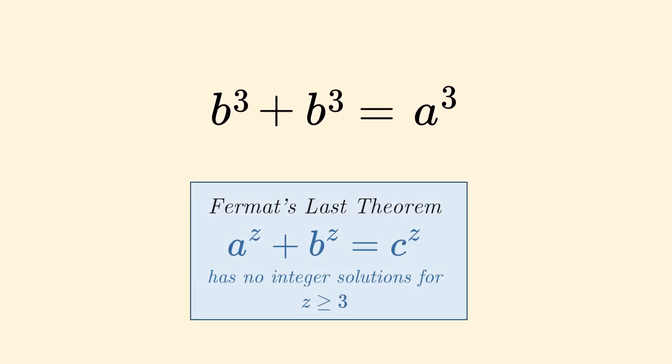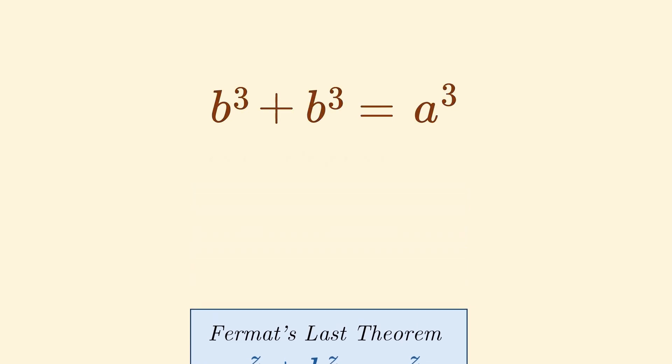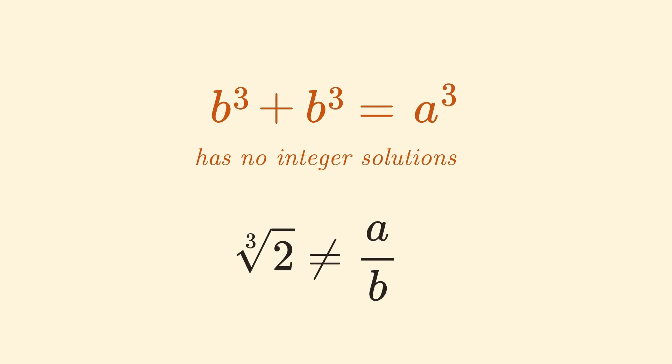Now you can see that we have an equation on the form where we can apply Fermat's Last Theorem. According to Fermat's Last Theorem, we can see that a and b cannot be integers, contradicting our initial assumption. Thus, the cube root of 2 cannot be written as a fraction of two integers, and so the cube root of 2 must be irrational.